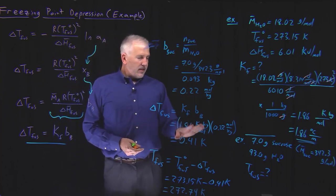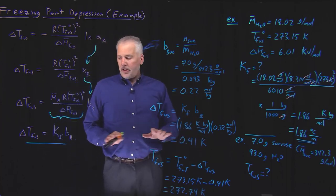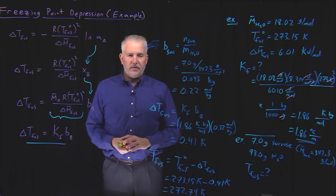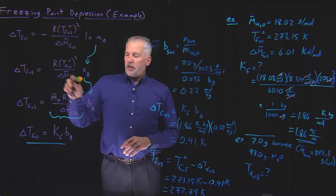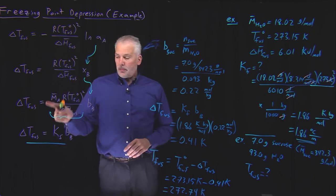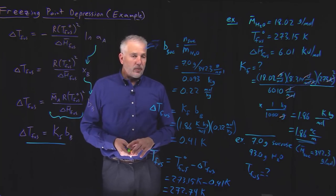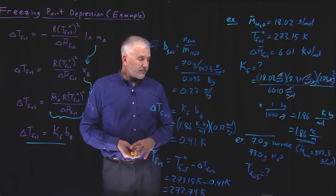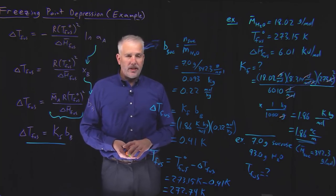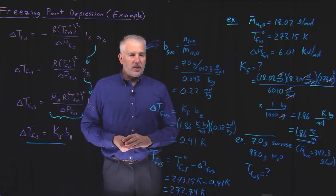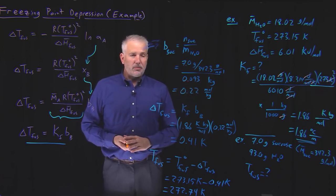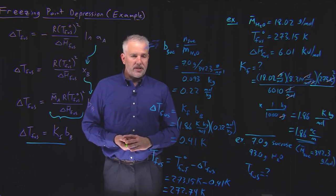That is an illustration of how to use this simple version of the freezing point depression equation. We can calculate the freezing point depression constant for any solvent we'd like. Everything we've done for freezing point depression, we can also do for boiling points, so we'll move on to boiling point modifications next.